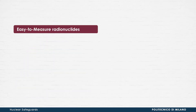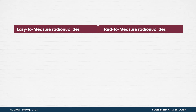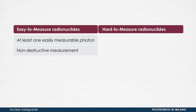Concerning their measurement, radionuclides can be split into two main categories: easy to measure and hard to measure. Those belonging to the first family have at least one characteristic gamma line that allows easy measurement by gamma ray spectrometry. This is a non-destructive measurement if it is directly performed in situ without collecting any sample. Examples of radionuclides belonging to this class are cobalt-60 and cesium-137.